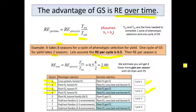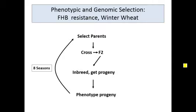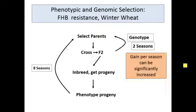Twice the gain per season with genomic selection versus phenotypic selection. So the advantage is not per cycle — the advantage of genomic selection is gain per season. There's just a diagram of that. Here's how you go through a cycle of phenotypic selection, things you're all familiar with. With genomic selection, you can cut out all that phenotyping part and your gain per season could be significantly increased.